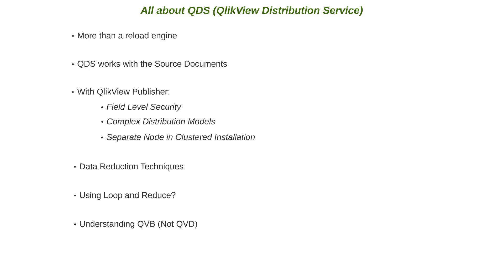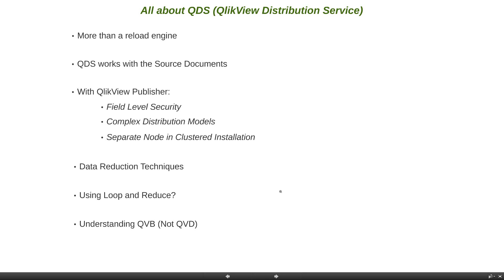If you have both server and publisher installed on the same server node, this might affect QVS because there will be a battle for resources. To avoid this, you should consider moving publisher to a separate node — that is the best long-term solution. If QVS and publisher are on the same machine with long distribution cycles or many concurrent distributions, they will fight over resources and contention may affect users. In a clustering environment, it is common to set up QDS and QMS on one node, and QVS and QEWS on a separate node along with the directory service connector.